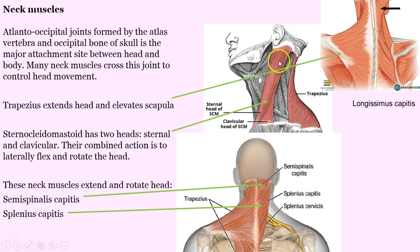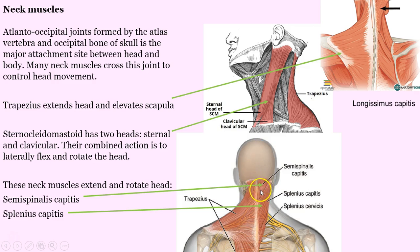The sternocleidomastoid is the huge superficial muscle. Its name — sterno — attaches here at the sternum. It has two attachment sites: a clavicular and a sternal site for attachment, going to the mastoid process of the occipital bone. Then semispinalis, up near the base of the occipital at the nuchal line. And then the splenius capitis — we got a brief look at that in the video at the very beginning when it got pulled off.